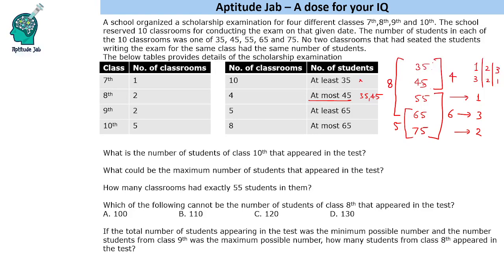Now let us answer the questions. The first question asks: what is the number of students of class 10 that appeared in the test? We are given that no two classrooms for the same class have the same number of students, and 5 classrooms are allotted to class 10. So all 5 must have different numbers. Since there are exactly 5 different values, just add them: 35 + 45 + 55 + 65 + 75 = 275.